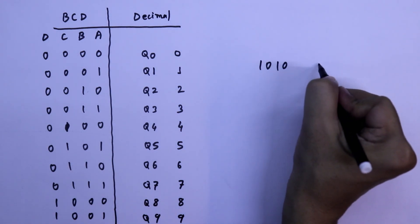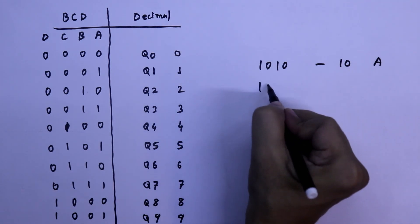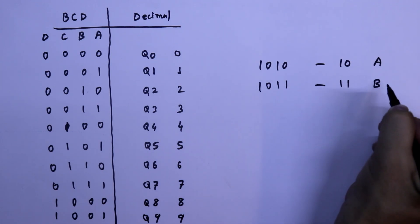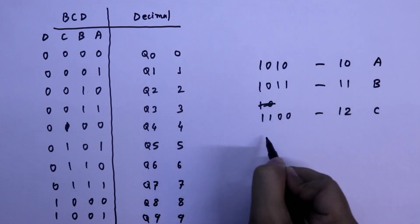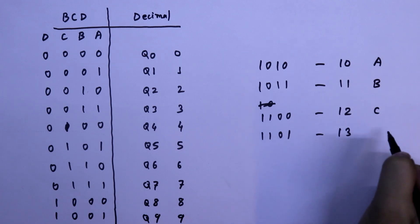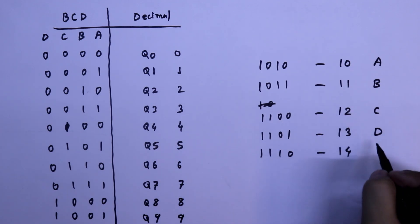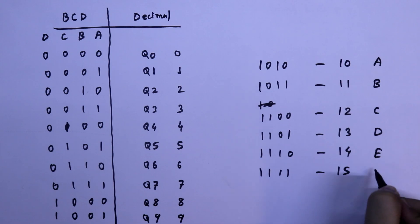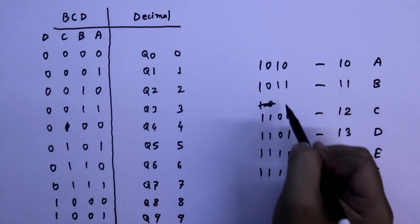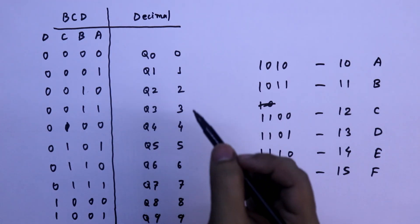Binary 1010 is equal to decimal 10 or hexadecimal A. Binary 1011, it is equal to 11 and hexadecimal B. Binary 1100, it is 12, decimal 12 and hexadecimal C. Binary 1101, decimal 13 and hexadecimal D. Binary 1110, decimal is 14 and hexadecimal it is E. And binary 1111, it is equal to decimal 15 and hexadecimal F. But this IC has the output only from 0 to 9.